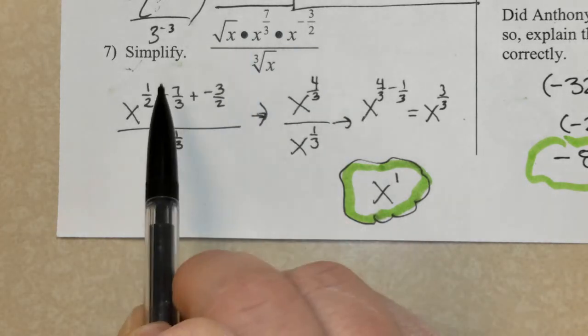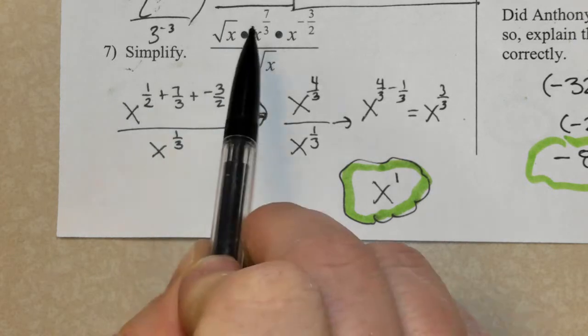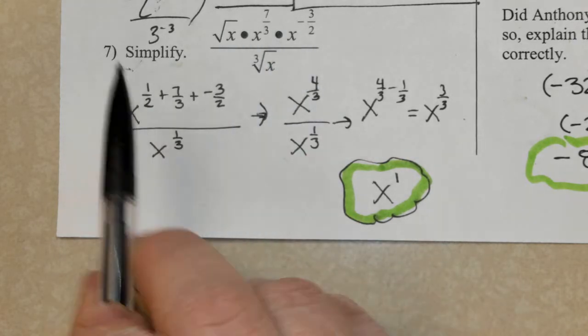So when I put it into rational exponent form, this is 1 over 2, 7 thirds, and a negative 3 halves.